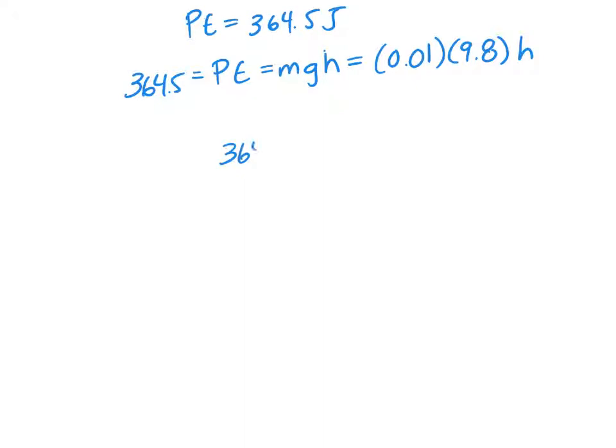And our potential energy was 364.5. So we have 364.5 equals 0.01 times 9.8 H. So now we can do math. We're going to divide 364.5 by 0.01 and then divide by 9.8 and we're going to get our answer, which comes out to a height of 3719.4 meters.